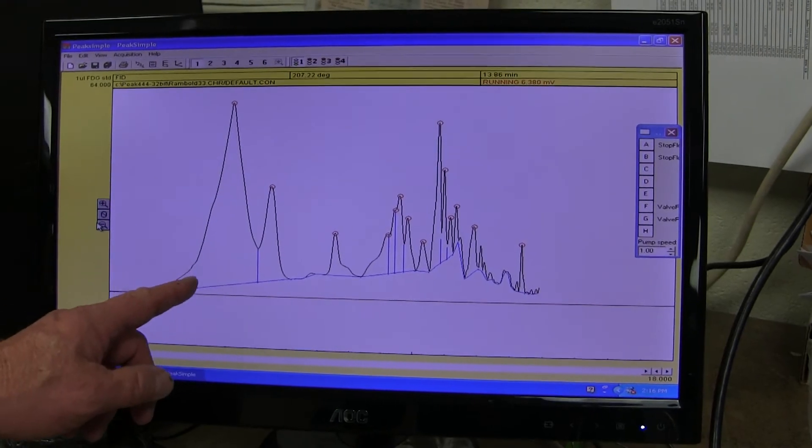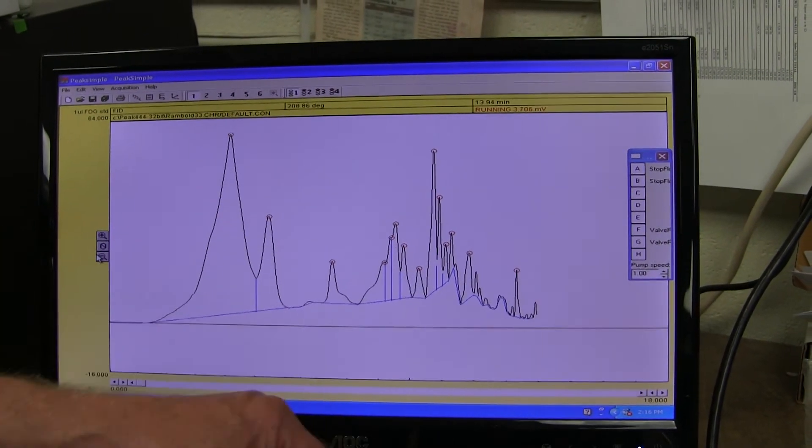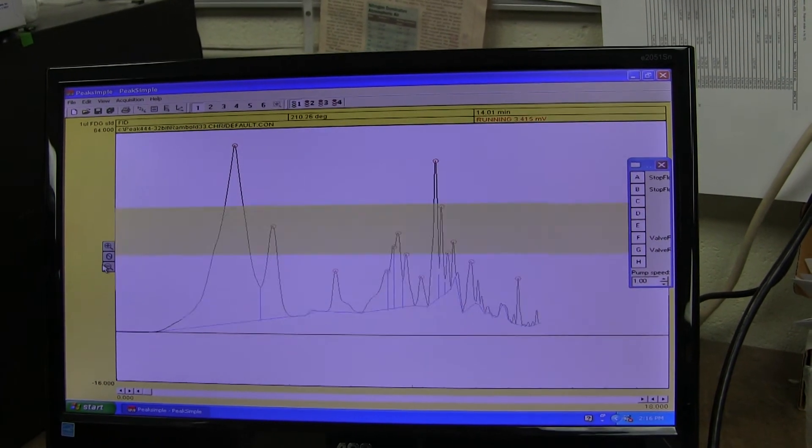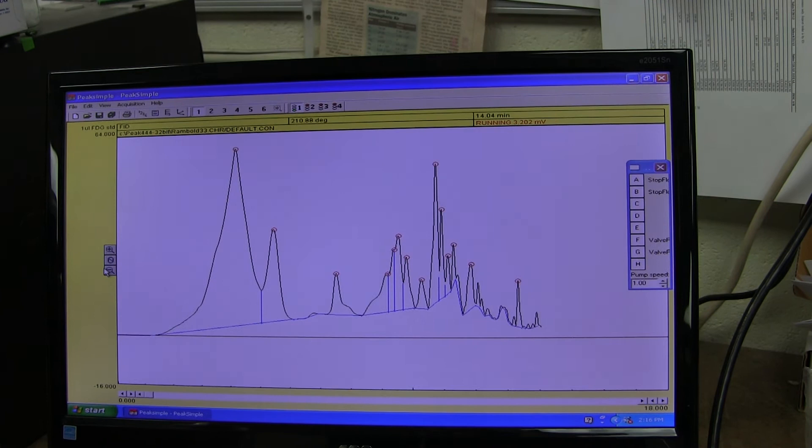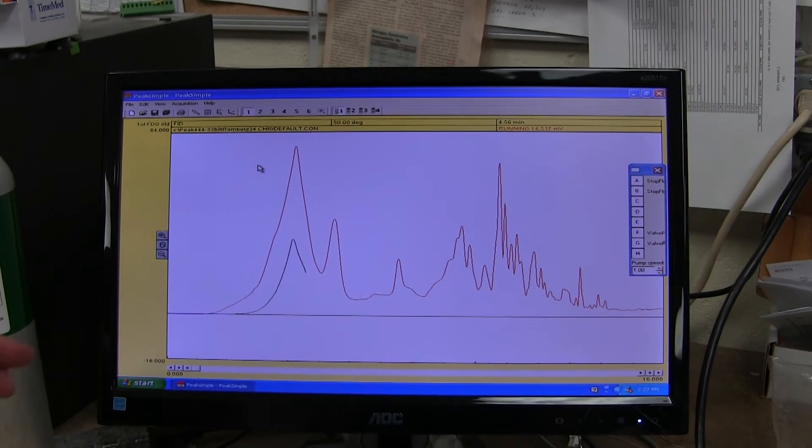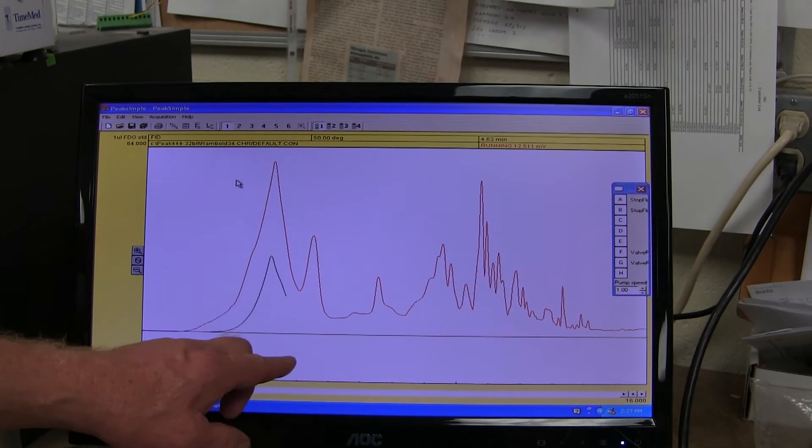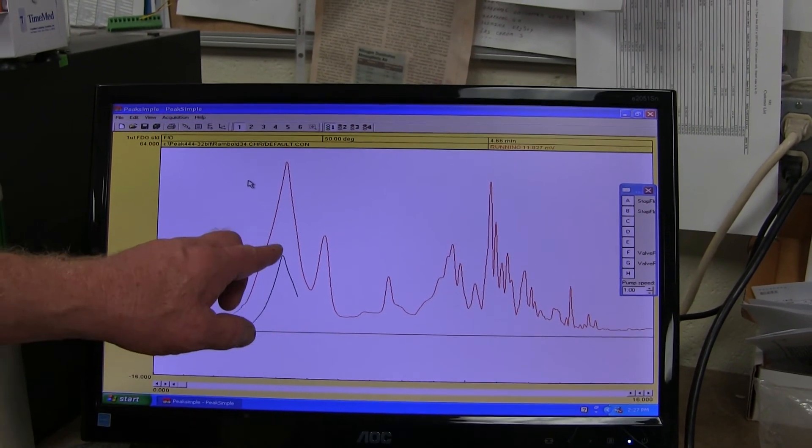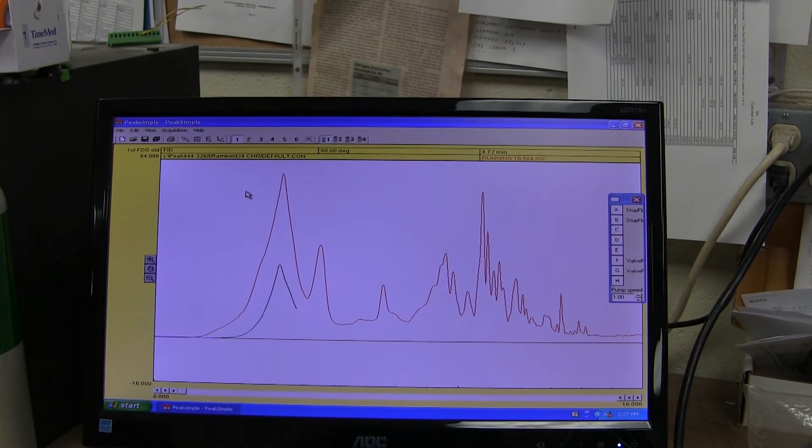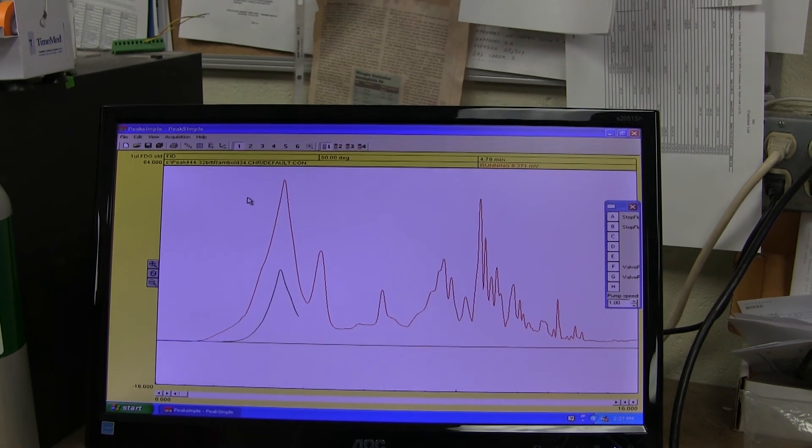An example of a really dirty polishing filter. Look at all these peaks that came out of that polishing filter when we heated it up. Just a ton of them. So this was a polishing filter that really needed to be baked out. The red is the first bake out of the polishing filter, and this black line is the second bake out. You can see that the polishing filter is dramatically cleaner on this second heating than it was on the first.